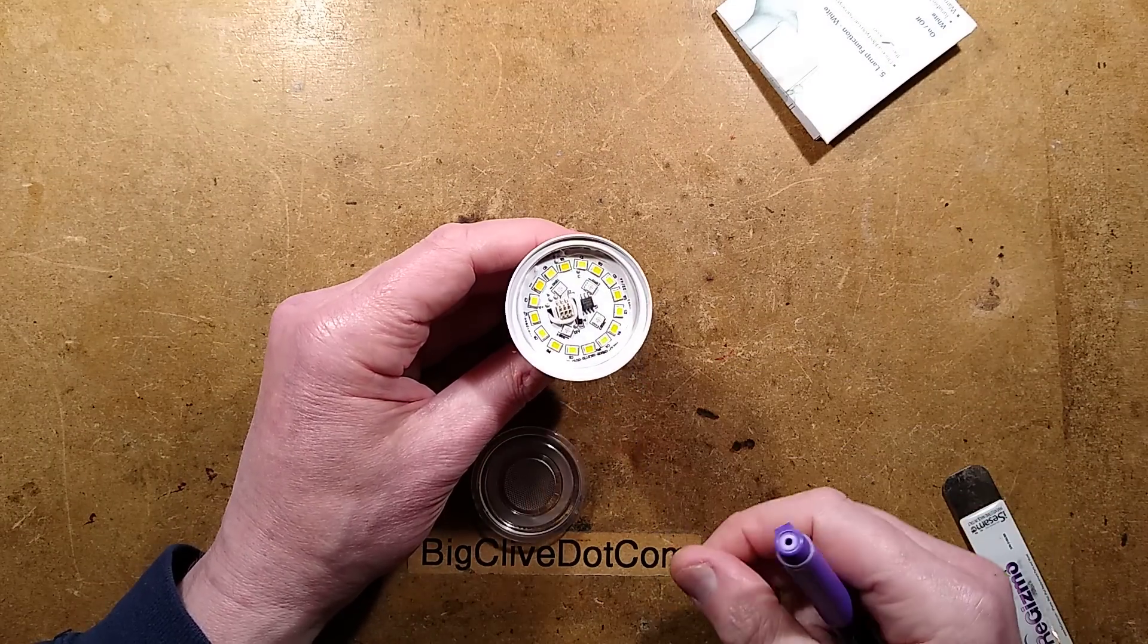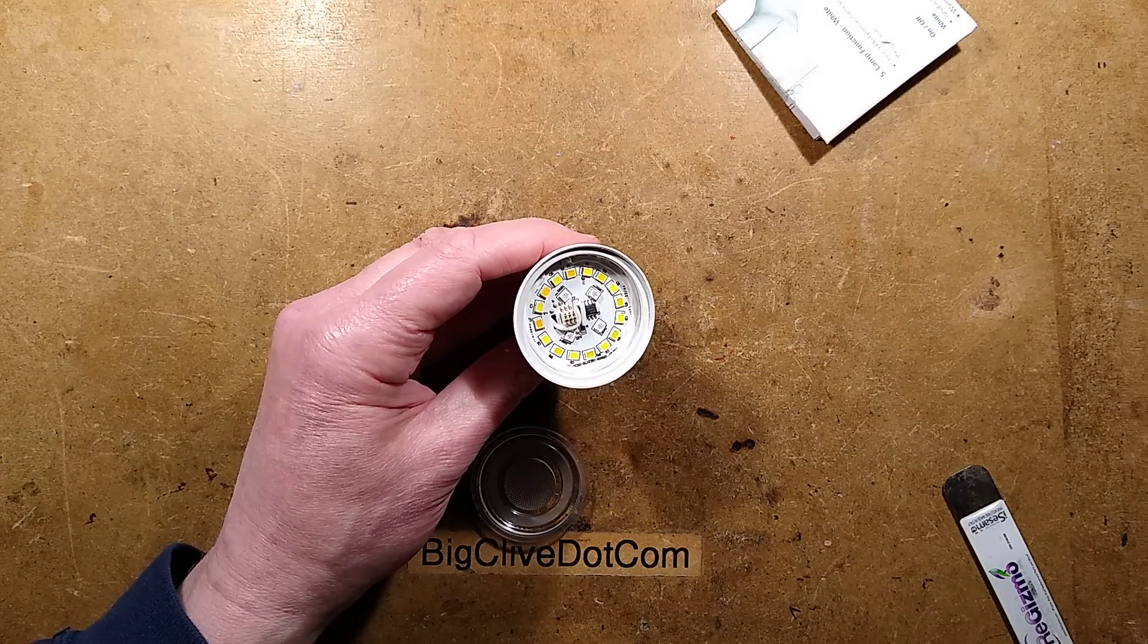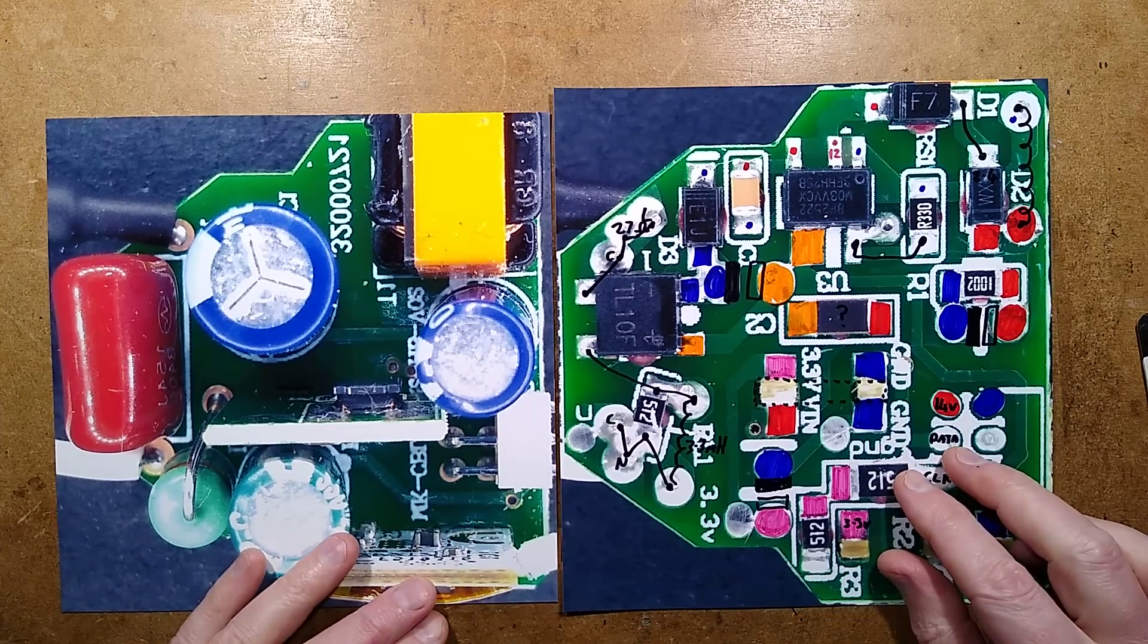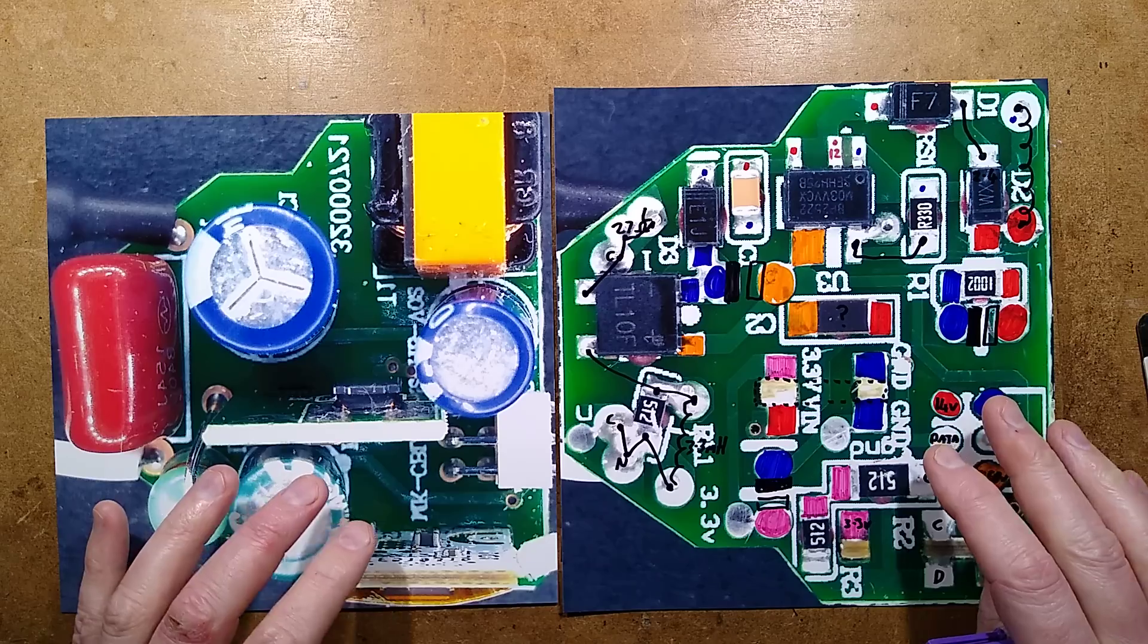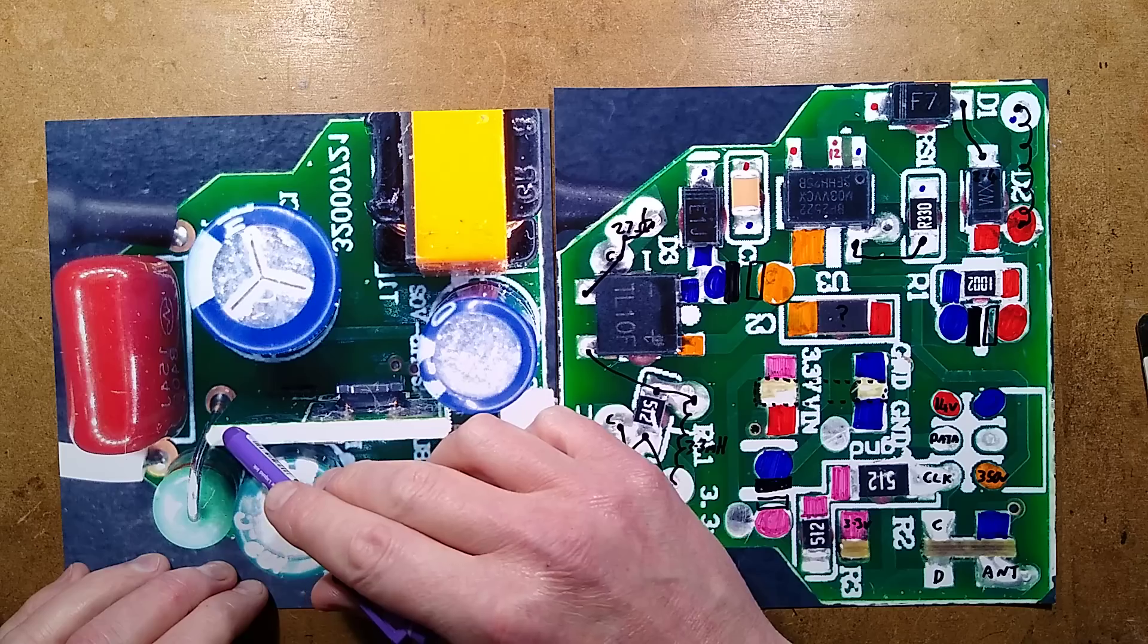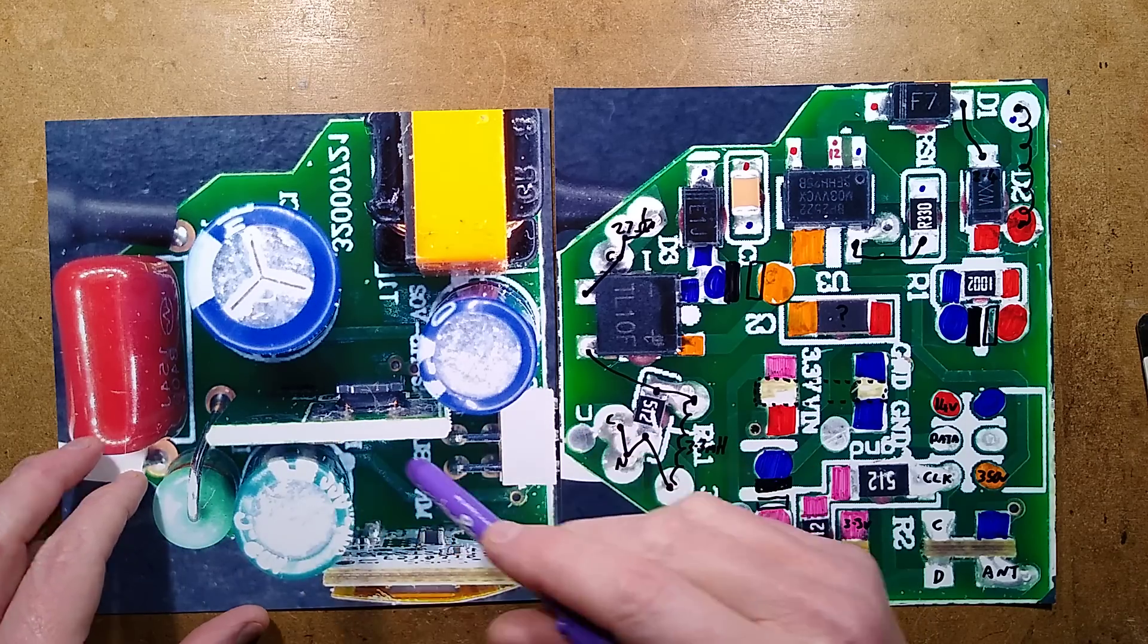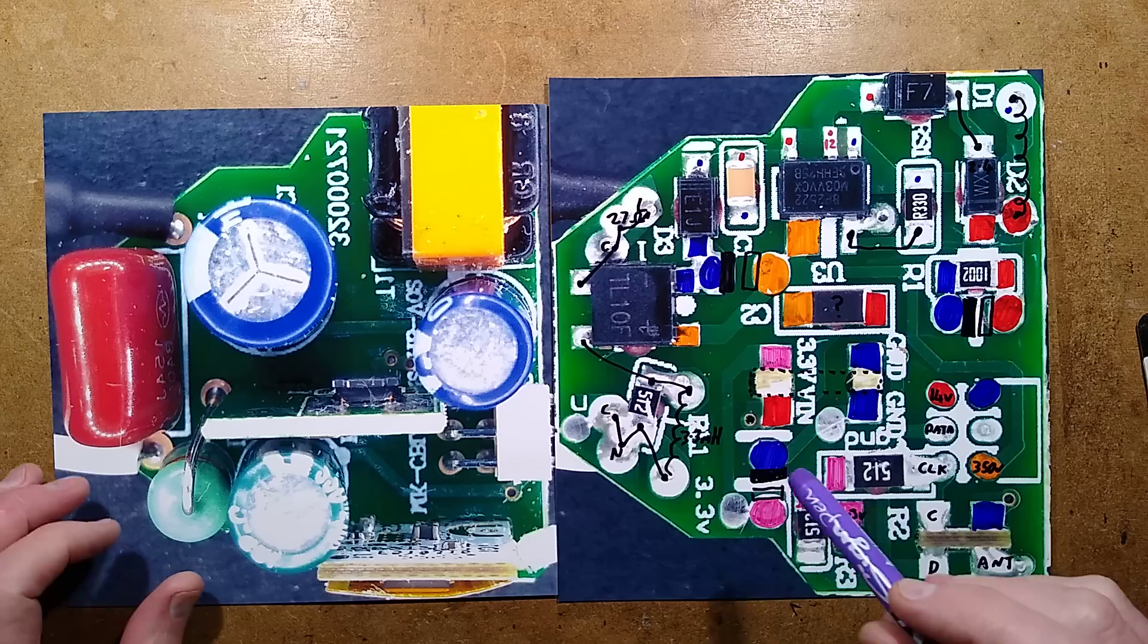You know what happens now - the circuit board comes out and we explore it. Quite interesting circuitry, I have to say. A couple of interesting chips, both by Bright Power. There is a mystery chip in this module here, tucked down inside - a little 3.3 volt regulator.